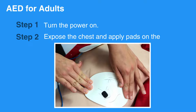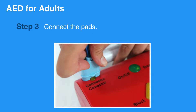If there's a bulge under the skin of their chest, a pacemaker may be present. Avoid placing the AED over the pacemaker and adjust placement accordingly. Connect the pads. Clear the person to make sure no one is touching any part of the victim. Let the AED analyze the rhythm.